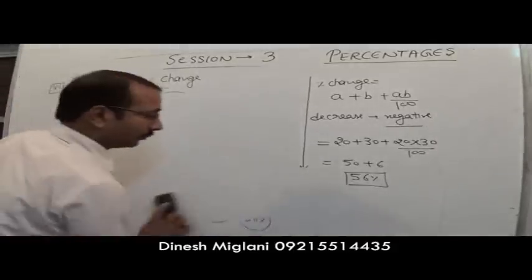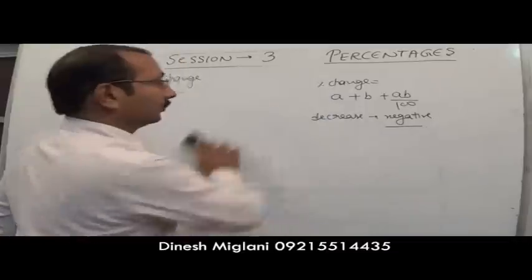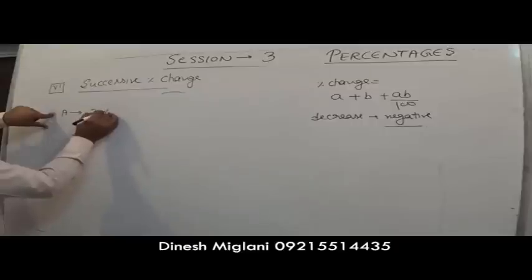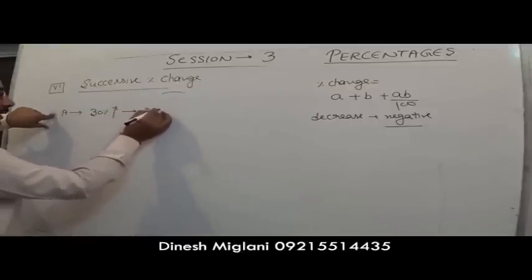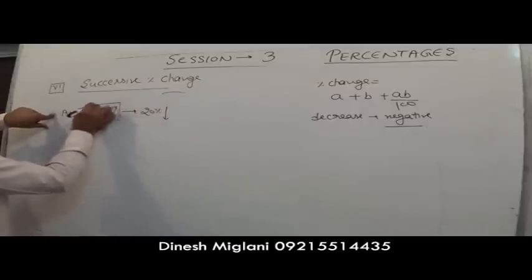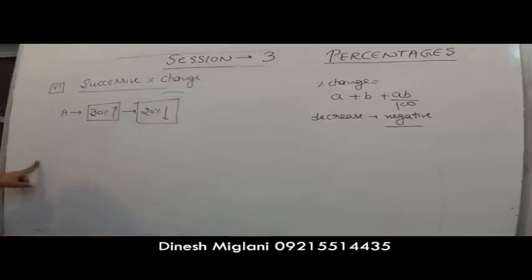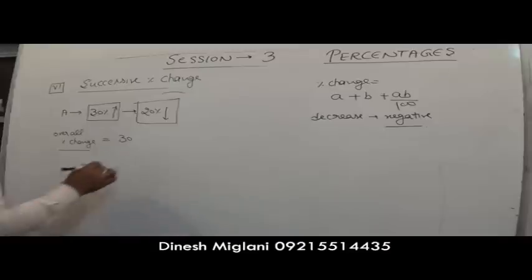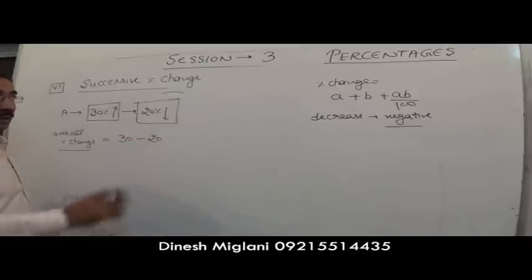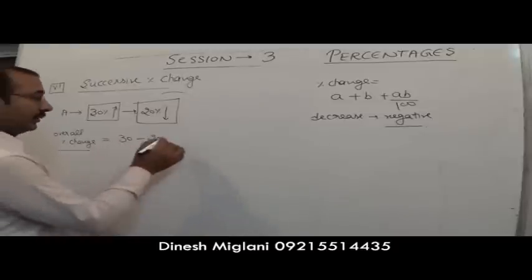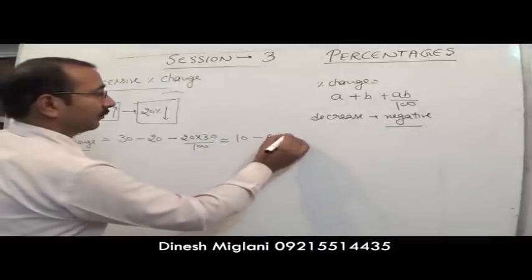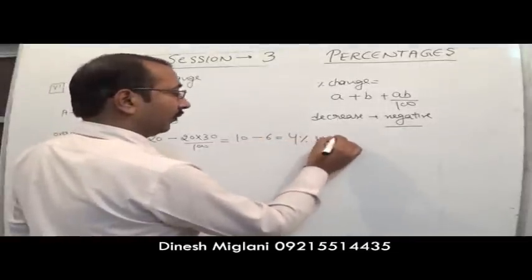Another example: number a first increases by 30%, then decreases by 20%. Applying the formula: 30 + (−20) + (30 × (−20))/100 = 10 − 6 = 4. Since it is positive, there is a 4% increase.